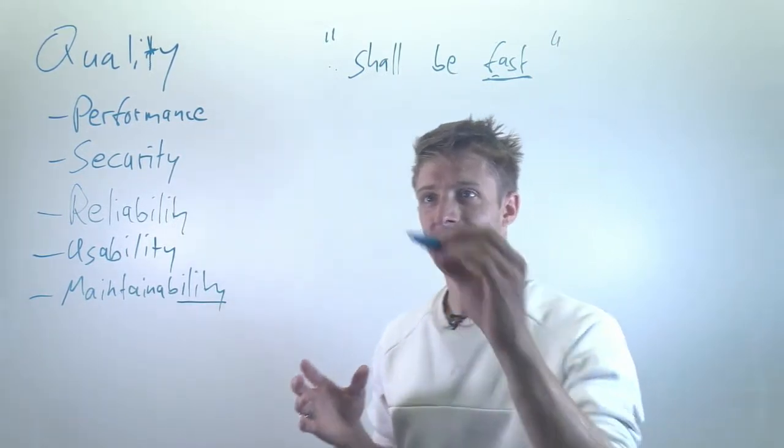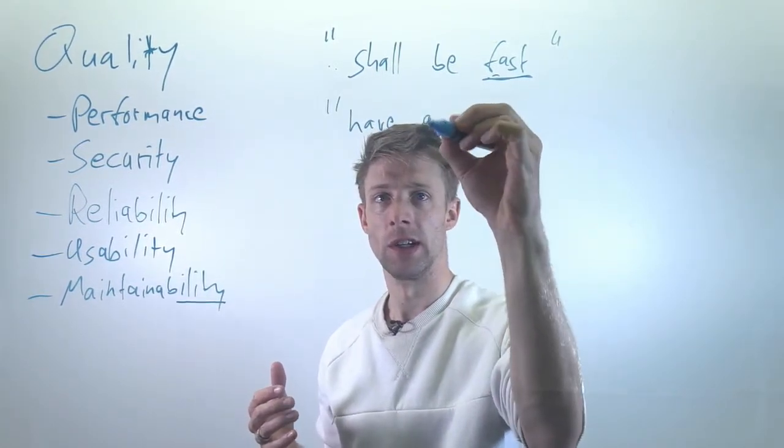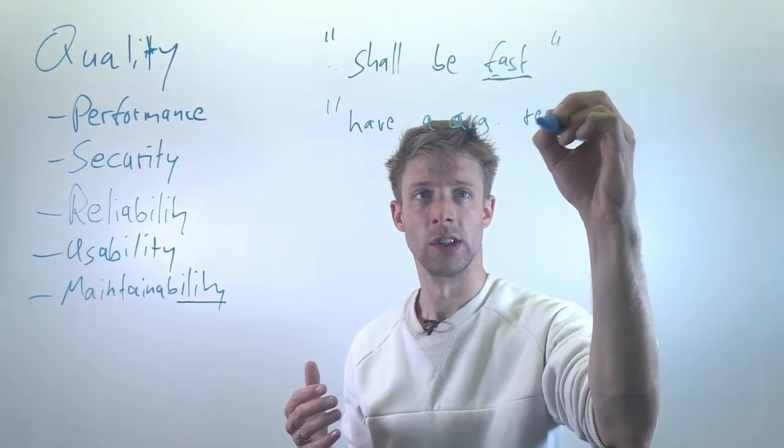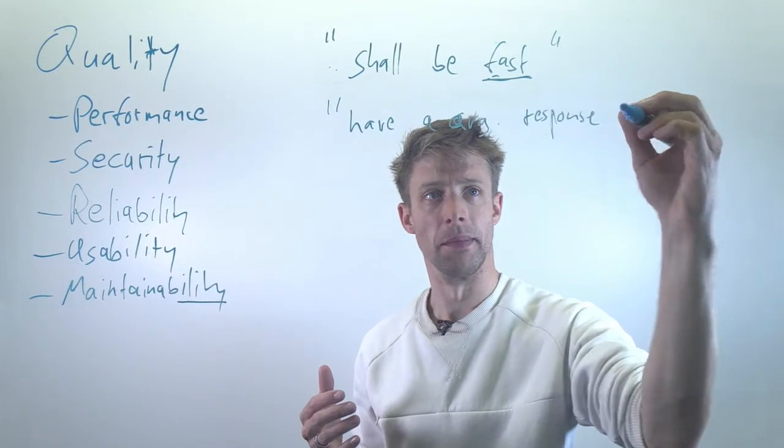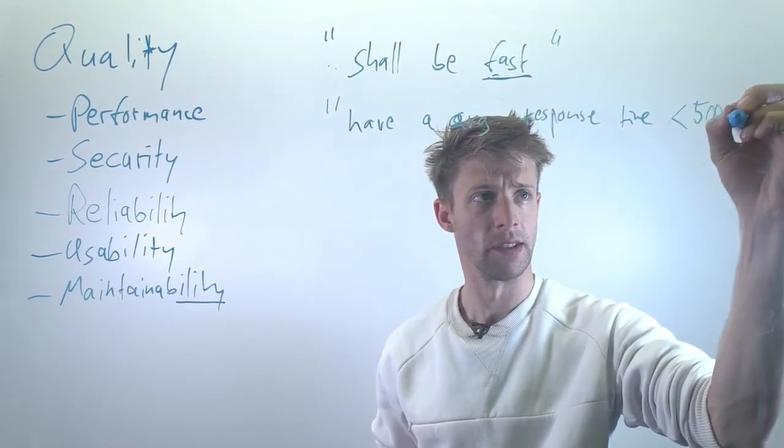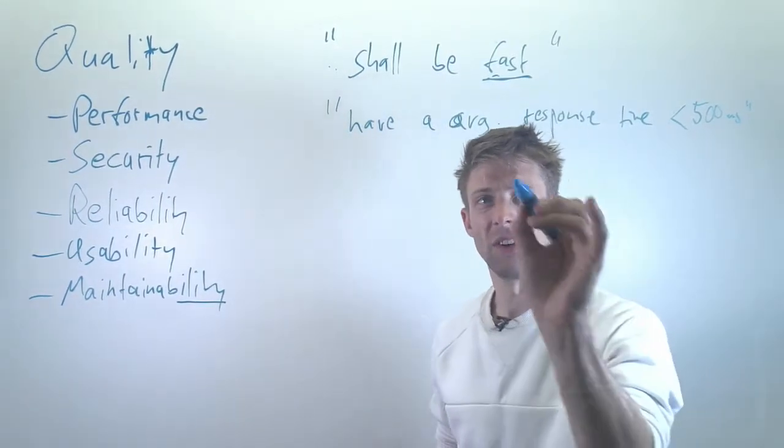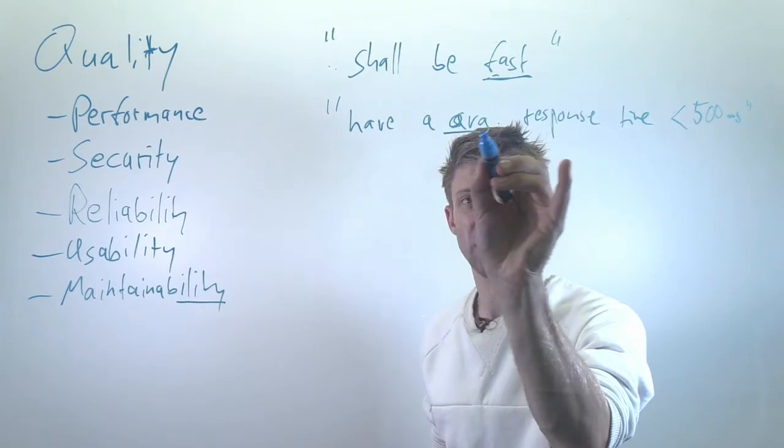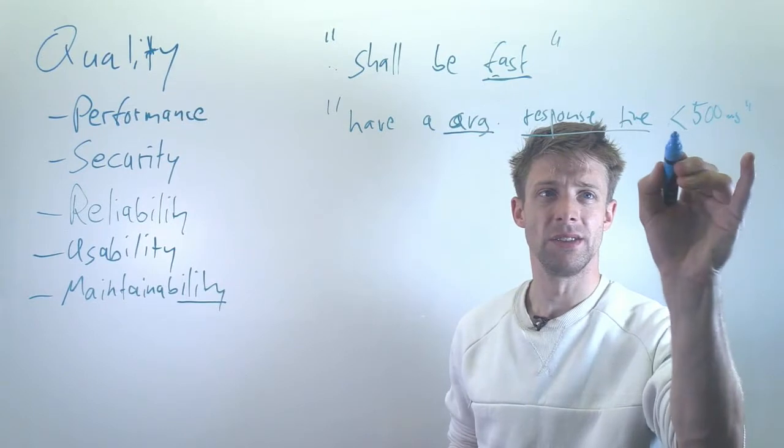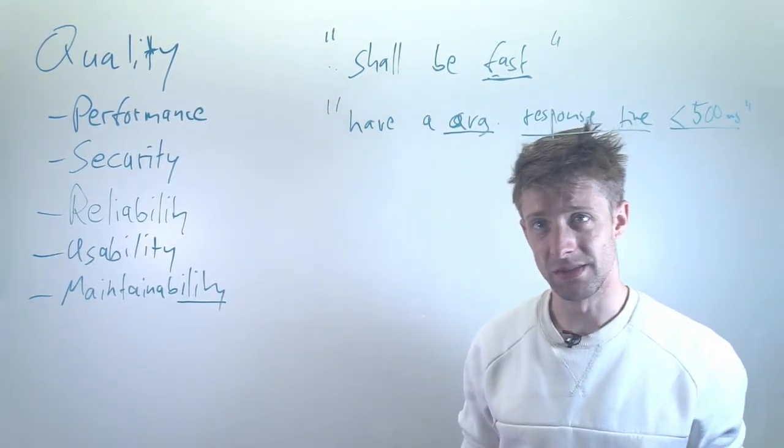The answer might be: it's better to say have an average response time smaller than 500 milliseconds. So that's already better because you know somehow what is being measured - it's how does the system respond on average - and you know what the limit is.